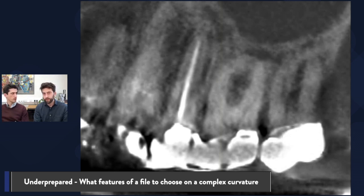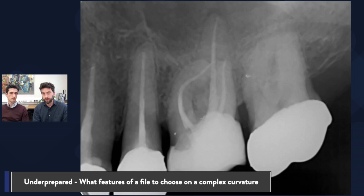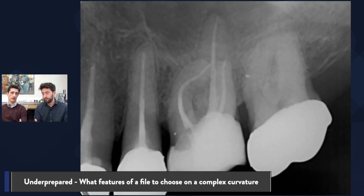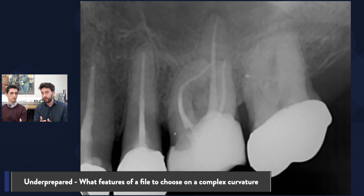What did you choose in this case? If we look at the post-op — the mesio-buccal is obviously the challenge, and you can see I have quite a significant curvature on it. So I chose a combination of things. I did a little bit of hand glide path to start with, just so I could get an understanding of what the canal was going to give me and what the curvature was like, and I did a little bit of brushing out. I used the True Anatomy system — the orifice modifier, which is the orifice opener — and you can see that slightly higher funnel shape if you compare it to the distal, for example. So I've accepted that there needs to be a bit of a trade-off, and I have brushed out a little bit — away from the furcation, so mesially.